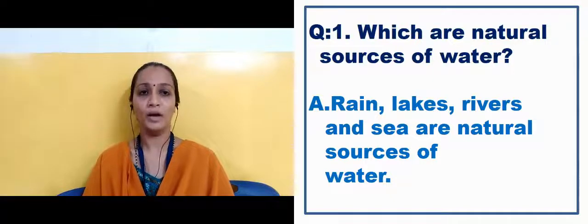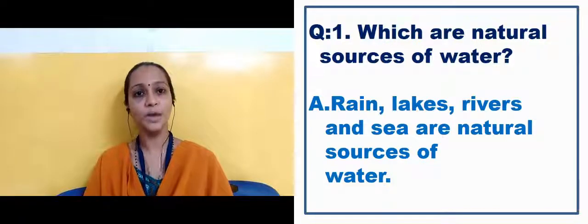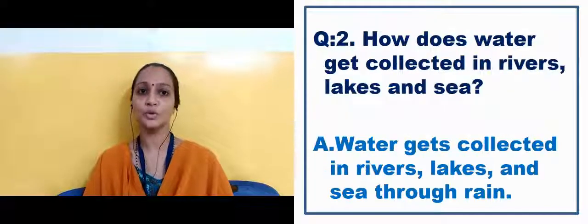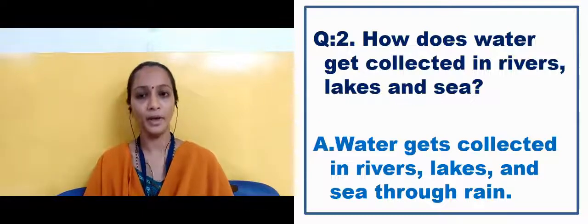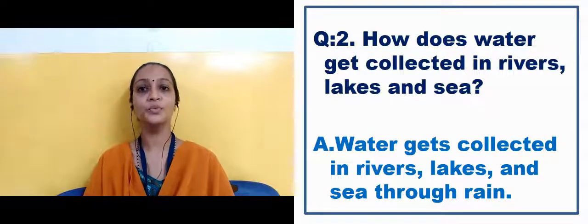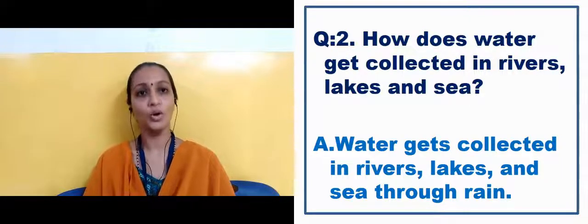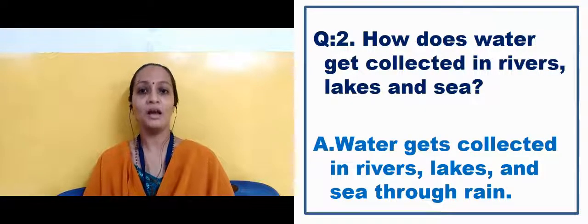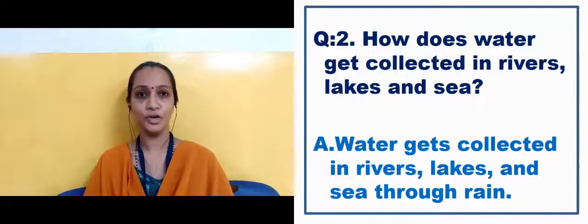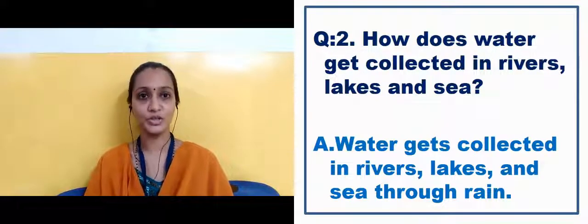Now in the next slide there are some question answers based on natural sources of water. First question: which are natural sources of water? In that we can say rain, lakes, rivers and sea are natural sources of water — rain, lake, river and sea jo hai, woh natural source of water hai jo God-made hai.